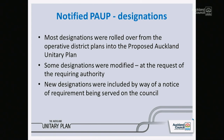In terms of the proposed plan that went out for submissions in 2013, most of the designations were simply rolled over from the seven operative district plans. Some of the designations that were rolled over were modified — that's the term from the RMA — where the requiring authority is seeking changes to the designation or to conditions that might apply. Prior to putting the plan out for submissions, we had to write to all requiring authorities asking if they wanted their designations to roll over, roll over with some modifications, or if they were seeking any new designations.